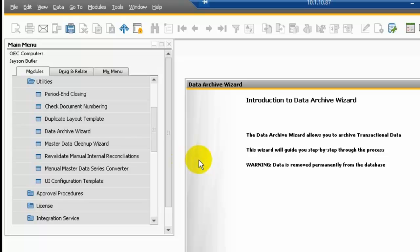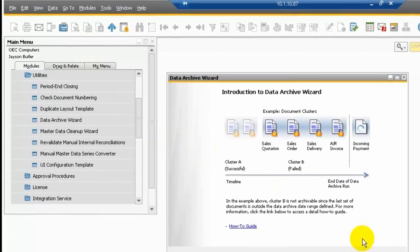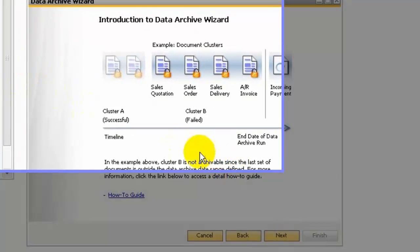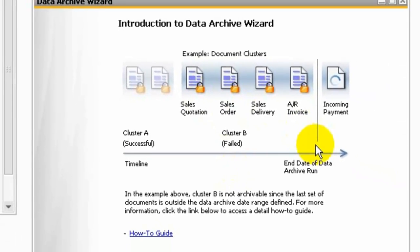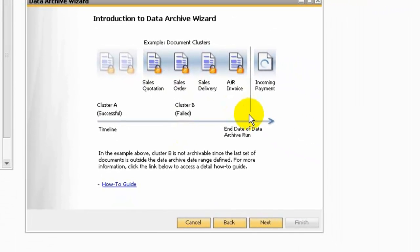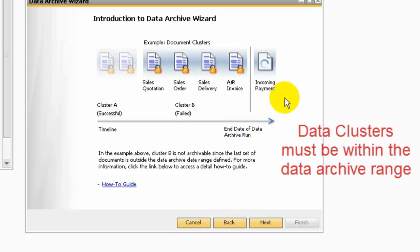The wizard will allow you to run data archive step by step. A cluster is a group of transactions linked to each other by business logic. Cluster A is from a sales quotation, copied to a sales order, copied to a delivery and then to an AR invoice. The last end date of the AR invoice is in the data archive range. But for Cluster B, the incoming payment is out of the data archive range, so Cluster B cannot be removed.